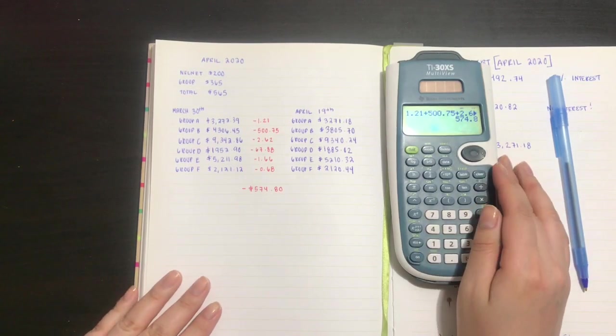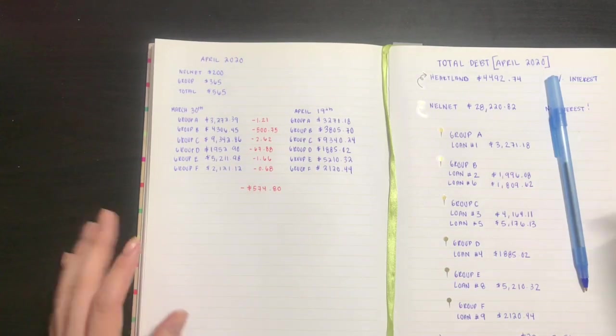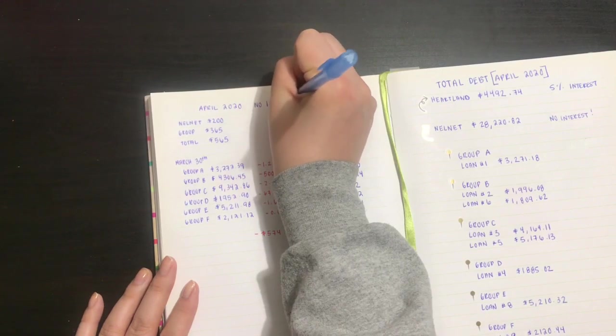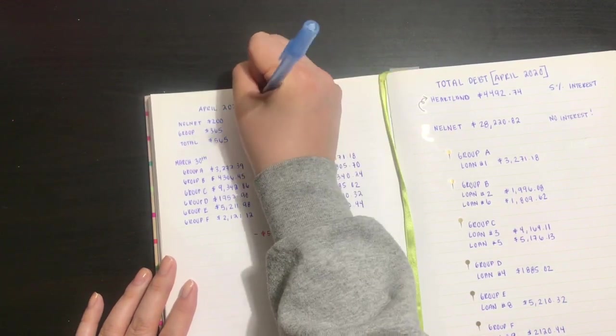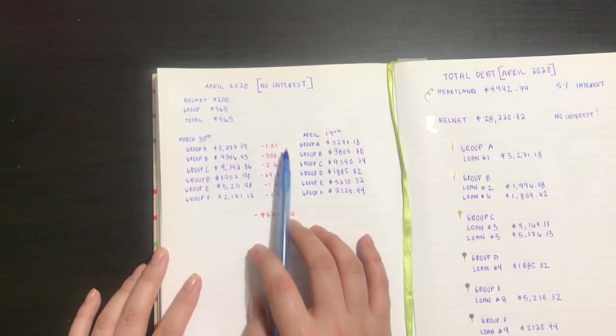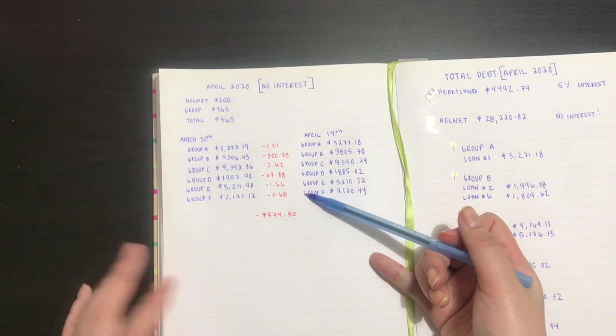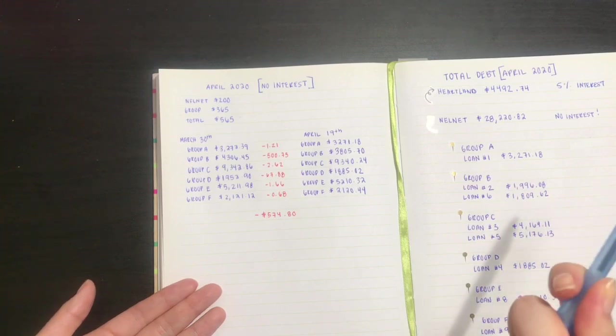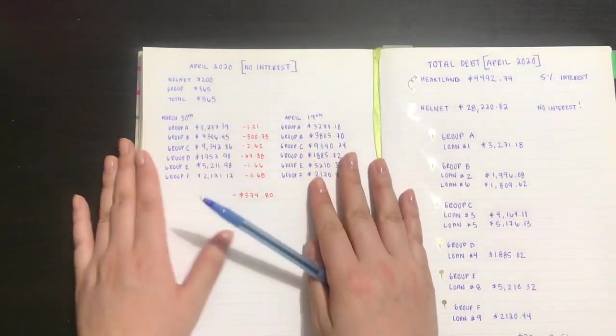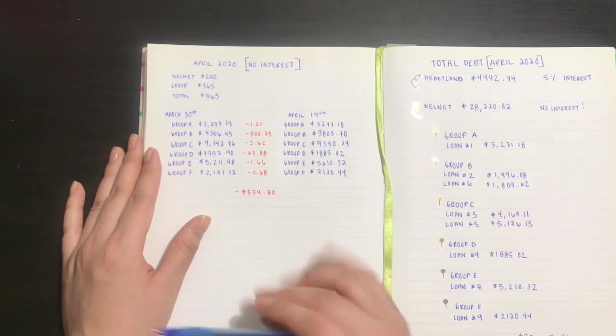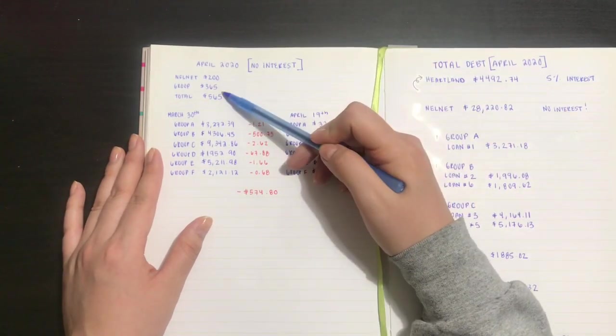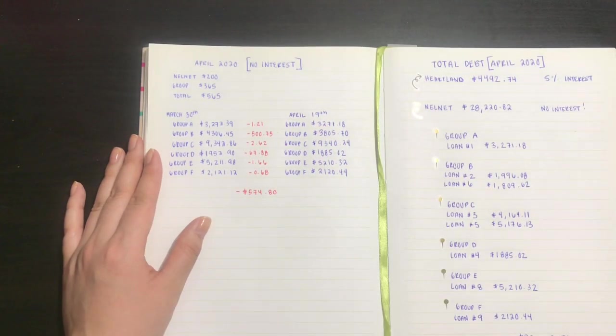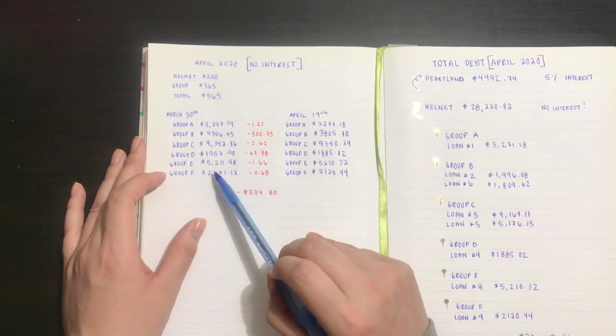So yeah, that's interesting to see. The only thing I can think of is that because they charged me interest in March, maybe they're giving that back to me. Whatever they took away from my payment for interest, they're giving it back to me now in April, who knows. But these are the numbers. Group B took the most out of my payment, and then also group D took a lot of the payment.